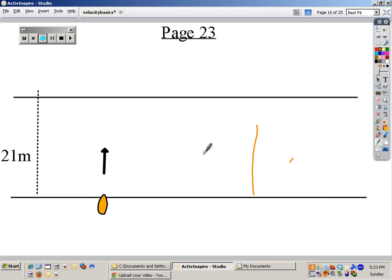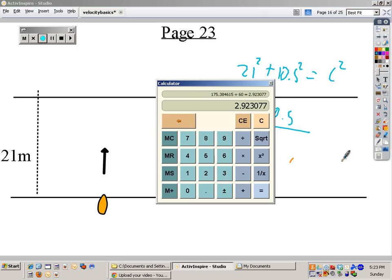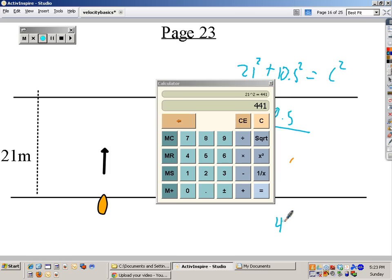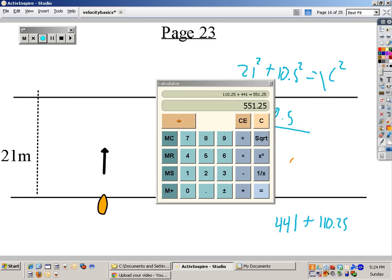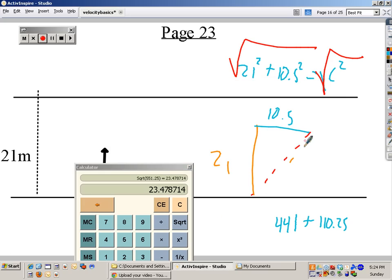We have 21, 10.5, so 21 squared plus 10.5 squared equals c squared. 21 squared equals 441 plus 10.5 squared equals 110.25 plus 441 equals that, and now I've got c squared, and I've got to undo it. So I'll square root everything, these two added up, which is this, square rooted, 23.4 meters, so the displacement is 23.4 meters.